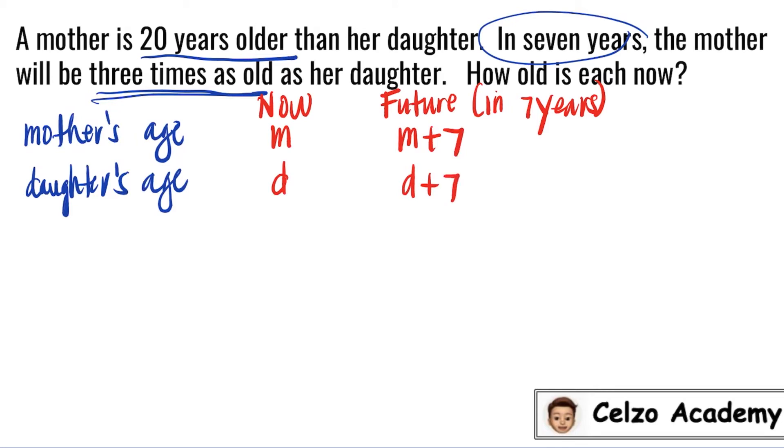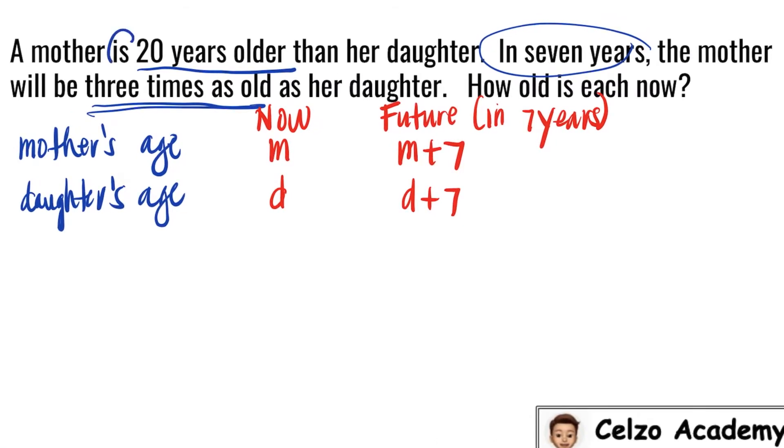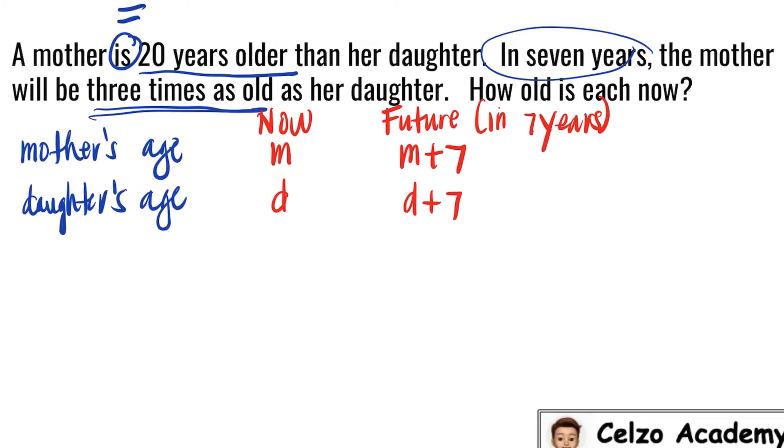Now let's consider the first statement. The first statement is talking about the present ages. Using the first statement, the word is in the statement number 1 means equal sign. So to write the equation for the first sentence, we have a mother's age M is equal to 20 years older than her daughter. So this means D plus 20 or that's the same thing as 20 plus D.